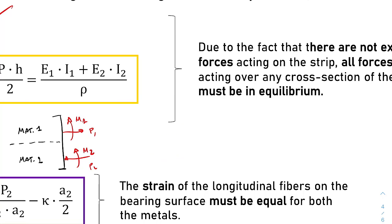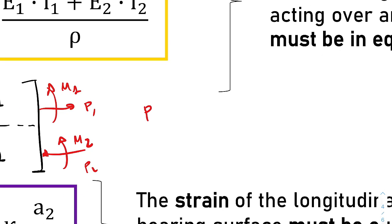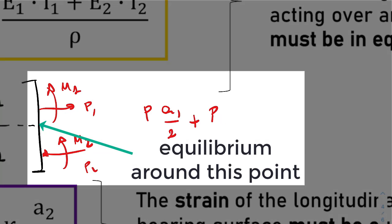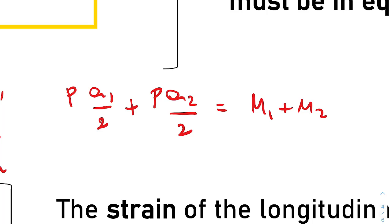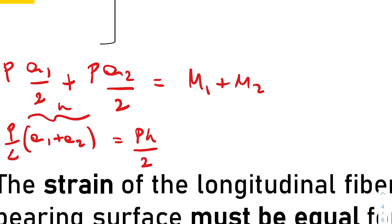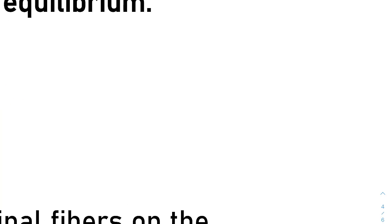The second result will come if we write the equilibrium of moments. You can easily write that P1 times A1 over 2 plus P2 times A2 over 2 is equal to M1 plus M2. So you can modify a little bit the left side, collecting P over 2 and therefore writing A1 plus A2 that is equal to H. So you get P times H over 2. On the right side of the equation, we have to make a fundamental hypothesis in the beam theory. That is, the curvature kappa is equal for both the layers. So layer one and layer two will have the same curvature. This is because a cross-section that is perpendicular to the neutral axis will remain perpendicular to it even after the deformation.